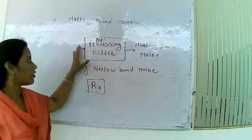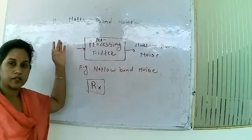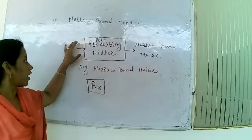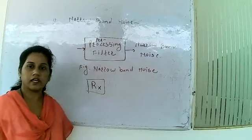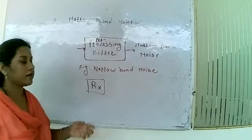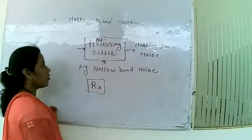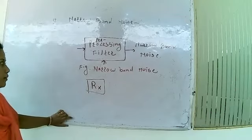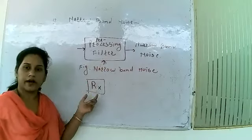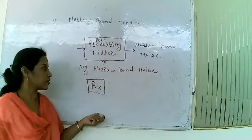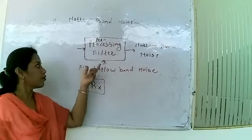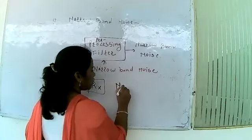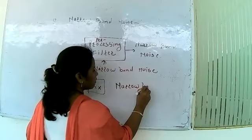What is the use of the pre-processing filter? Whatever data is coming from the sender through the communication channel will be followed by the receiver, and that's why there is a pre-processing device before the receiver called a filter. We need this pre-processing filter because we have some additional noise in the original signal. To remove that, we require a pre-processing filter, which is nothing but a narrow band filter.